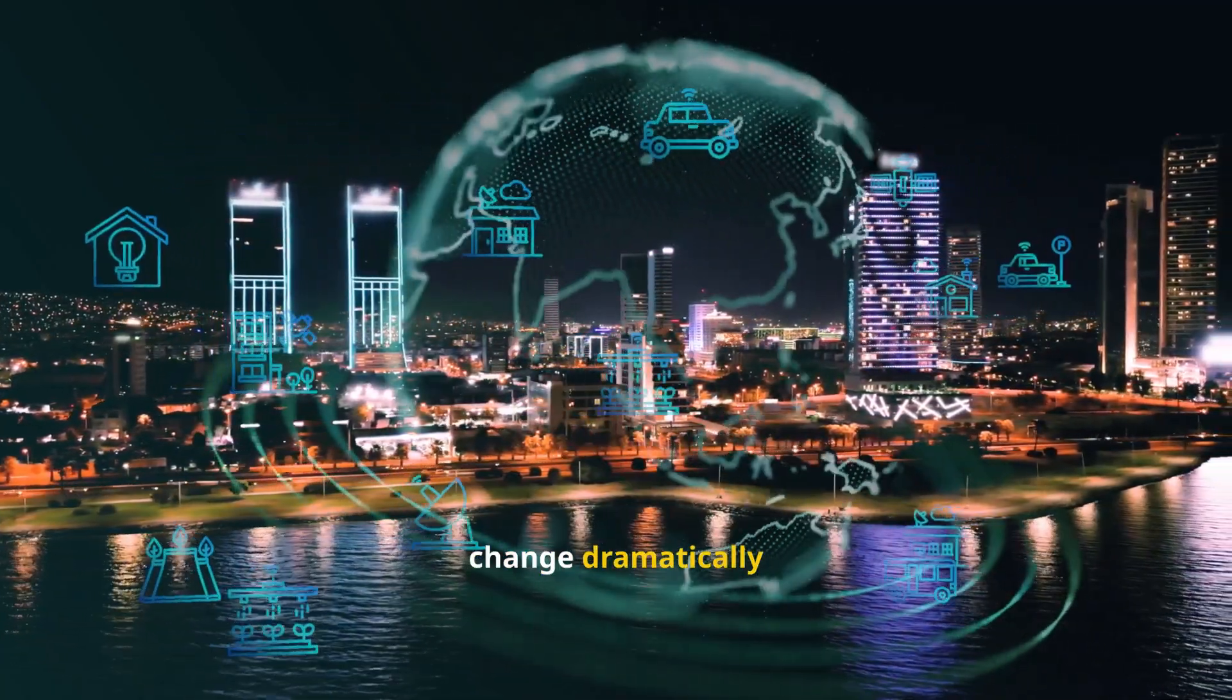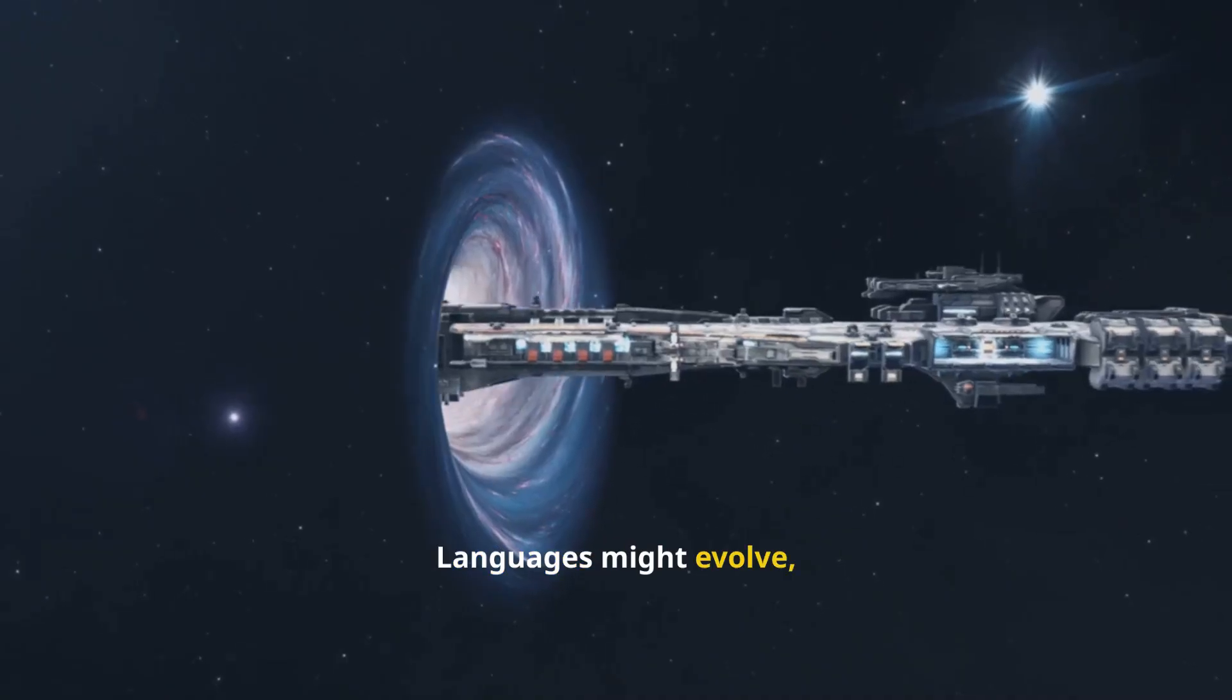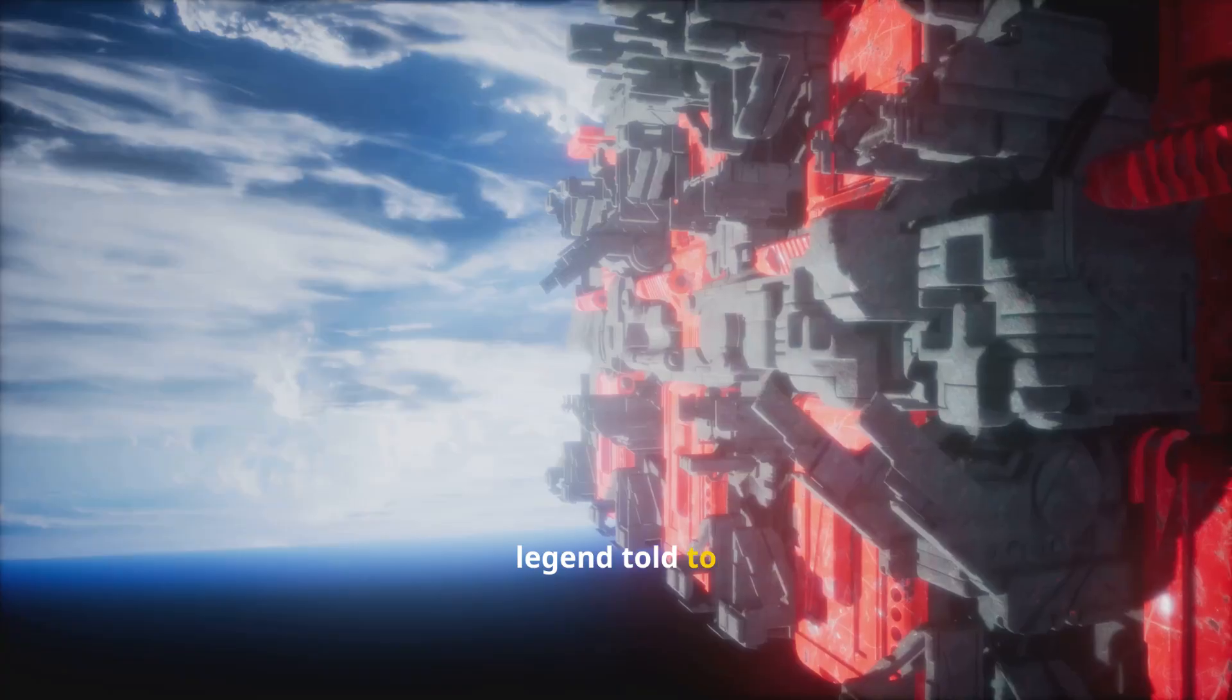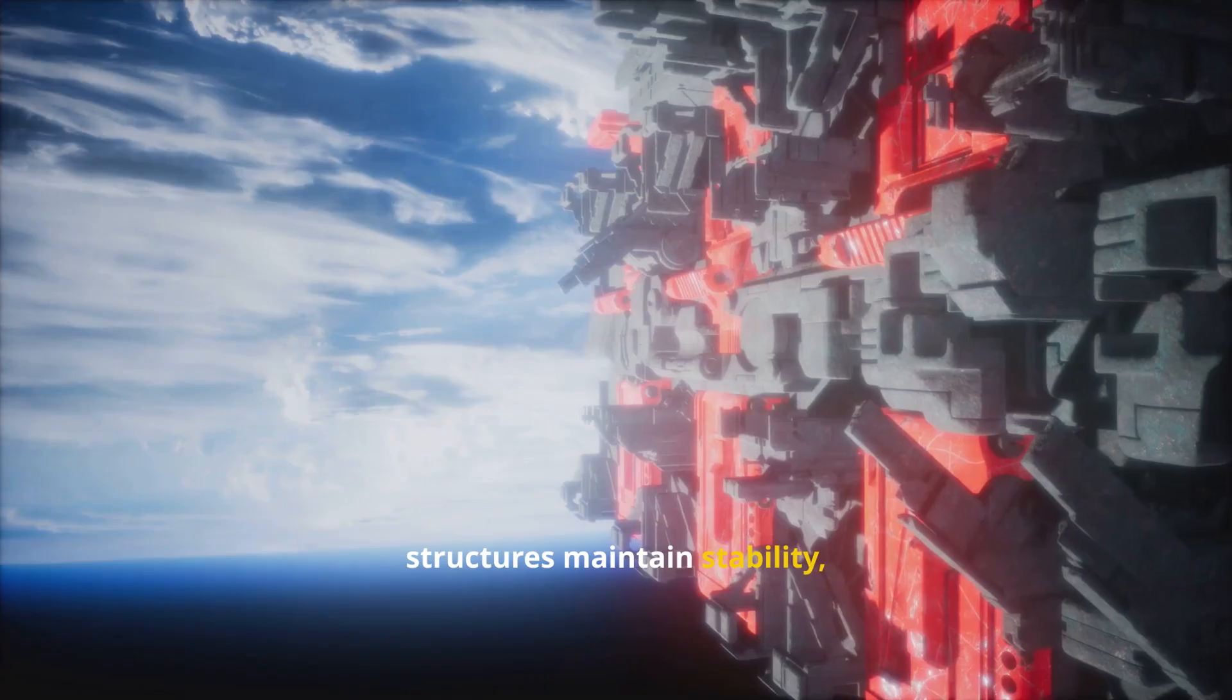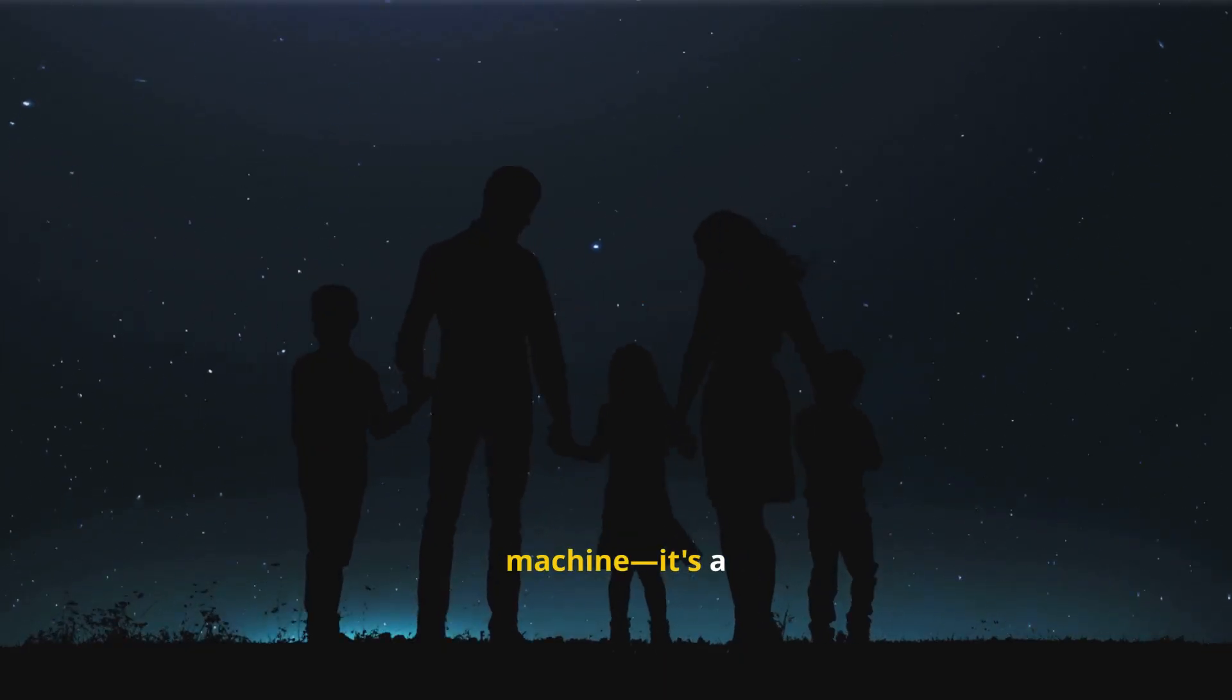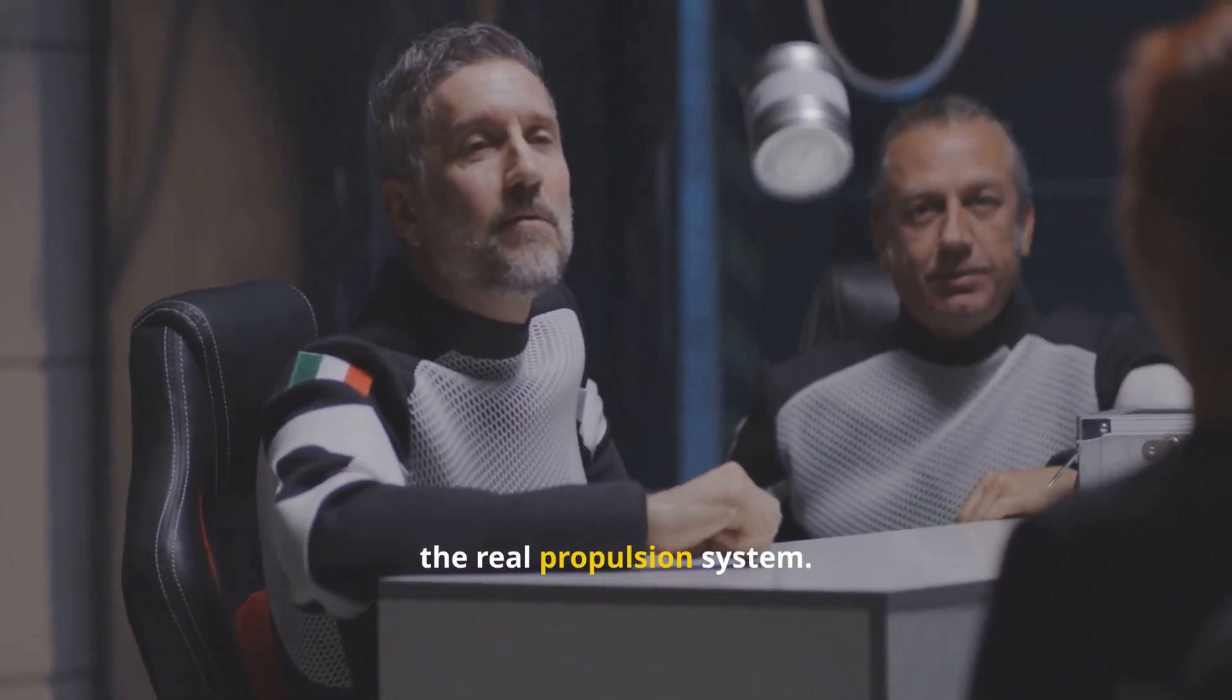Human cultures change dramatically in just a century. Imagine the cultural drift after 10 or 20 generations in deep space. Languages might evolve, belief systems could shift, hierarchies might rise or fall. Would the mission's purpose survive, or would it become legend told to children under artificial skies? Could governance structures maintain stability, or would new political systems emerge in isolation? Anthropologists argue that a generation ship is not just a machine. It's a living experiment in sociology on an unprecedented scale, where human adaptability may be the real propulsion system.